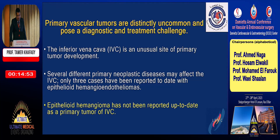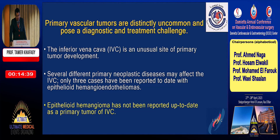Primary vascular tumors are distinctly uncommon and pose a diagnostic and treatment challenge. The inferior vena cava is an unusual site for primary tumor development. Several different primary neoplastic diseases may affect the IVC, but only three cases have been reported to date with epithelioid hemangioma.